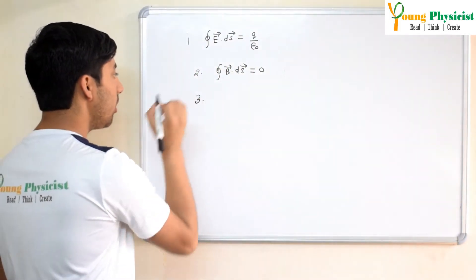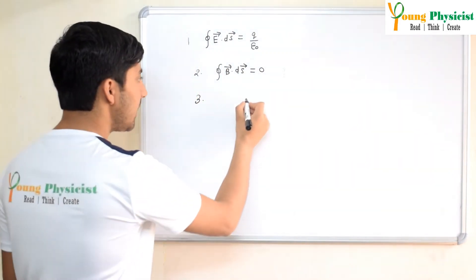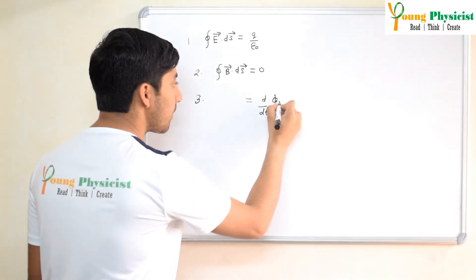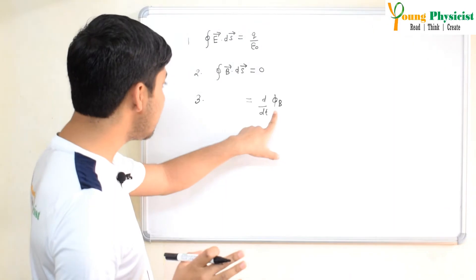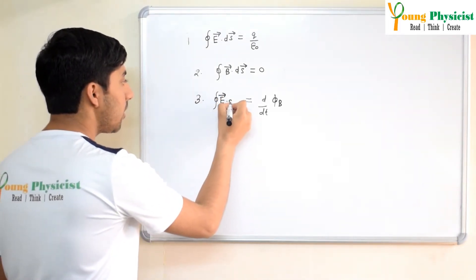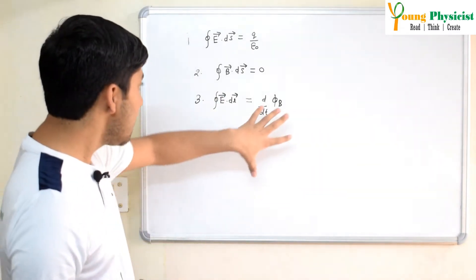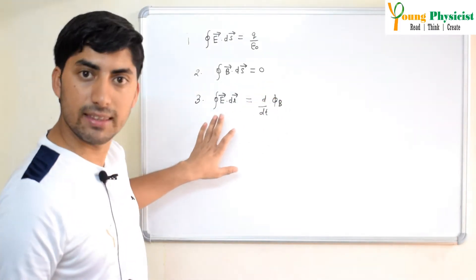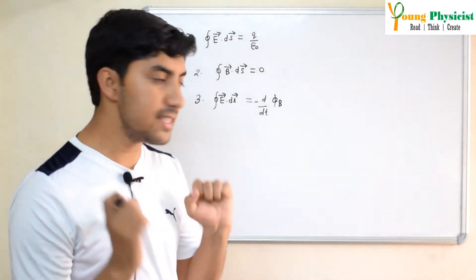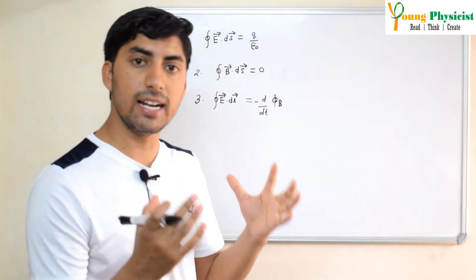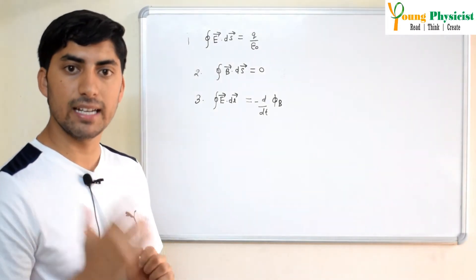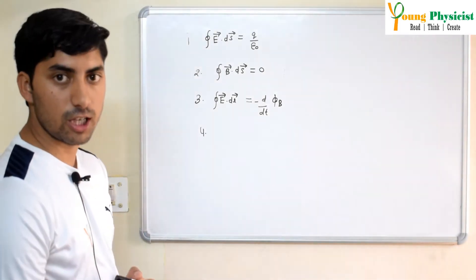The third equation is Faraday's Law of Electromagnetic Induction. It states that if the magnetic flux Φ_B changes with respect to time, there is a production of EMF. That EMF is written as the line integral of the electric field over a closed loop. The negative sign is a consequence of Lenz's law, which says the induced EMF will always oppose the change in magnetic flux. This is Michael Faraday's law of electromagnetic induction.